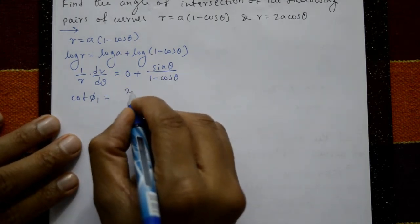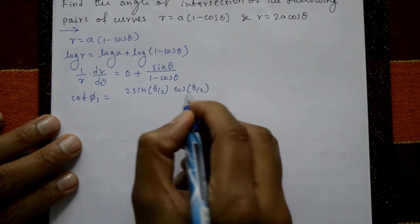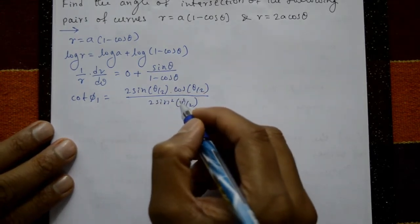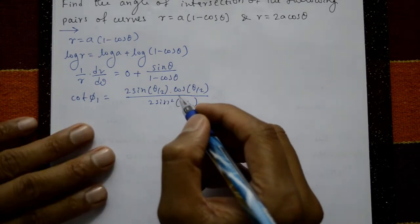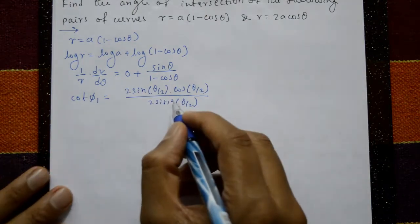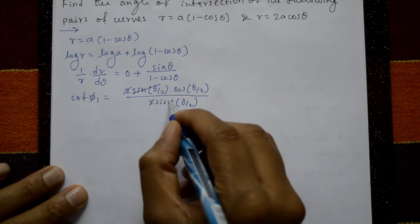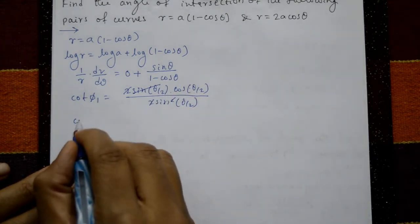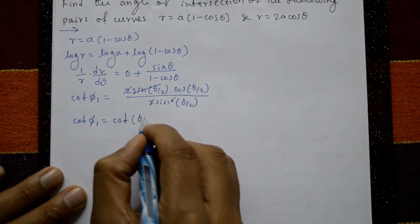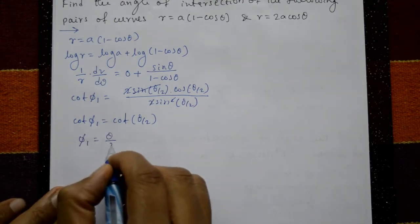Now sinθ/(1 − cosθ) = 2sin(θ/2)cos(θ/2) / (2sin²(θ/2)). The 2's and one sin(θ/2) cancel, leaving cos(θ/2)/sin(θ/2) = cot(θ/2). Therefore cotφ₁ = cot(θ/2), giving φ₁ = θ/2.